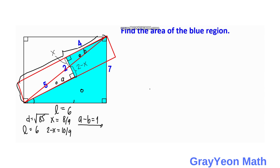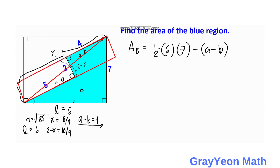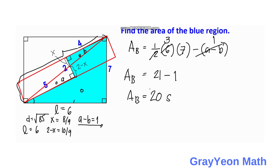The area of the blue region equals the area of half the rectangle (the right triangle with the diagonal as hypotenuse) minus (A − B). That gives: ½ × 6 × 7 − 1 = 3 × 7 − 1 = 21 − 1 = 20 square units — the same answer as Method 1.